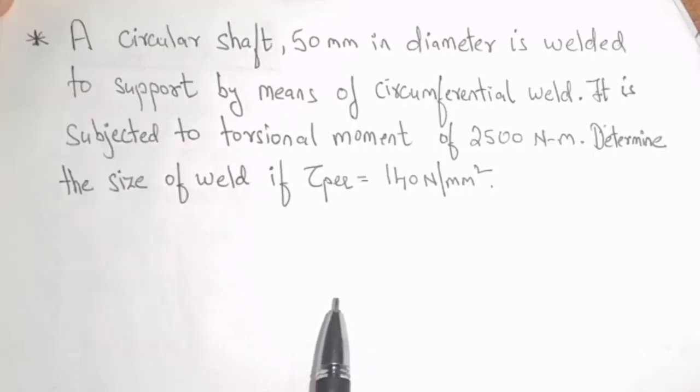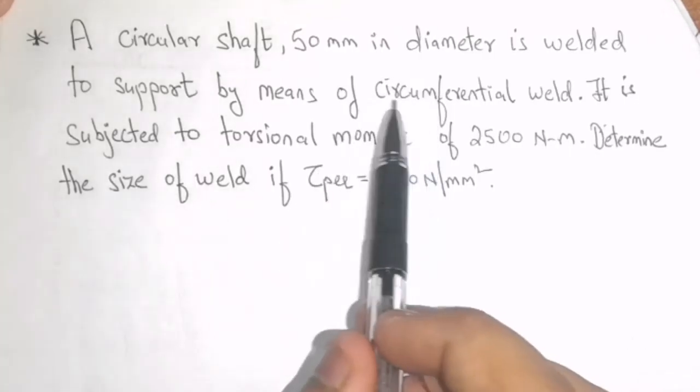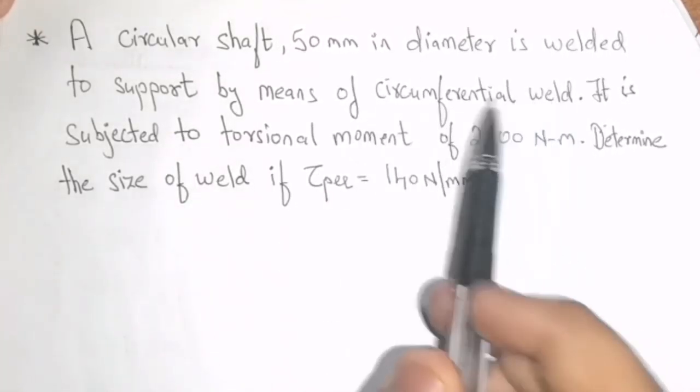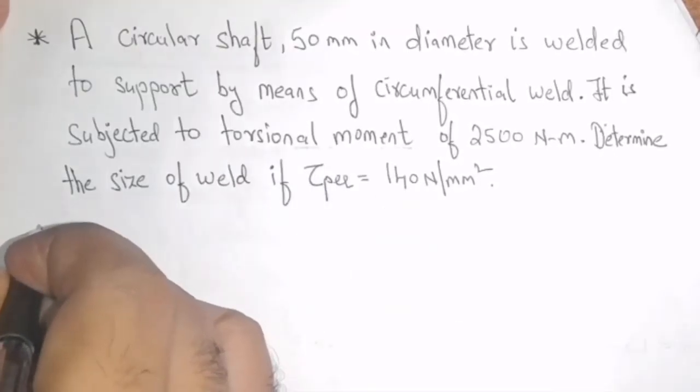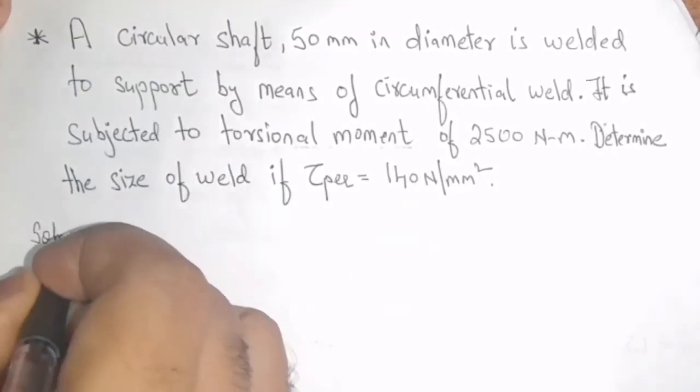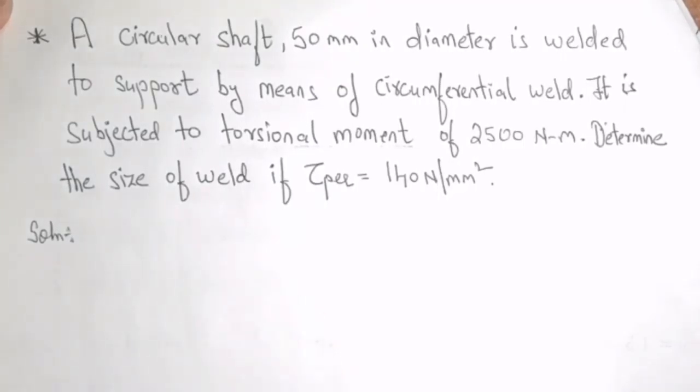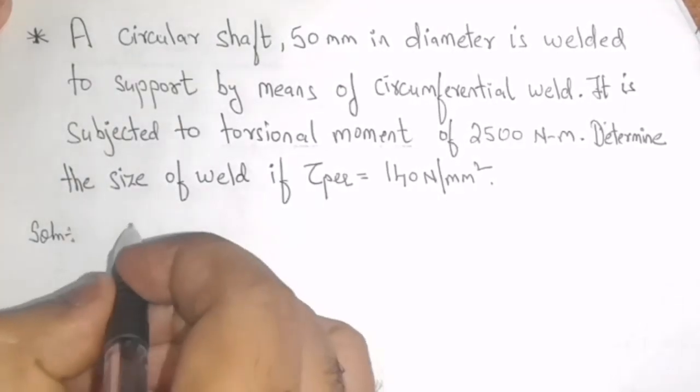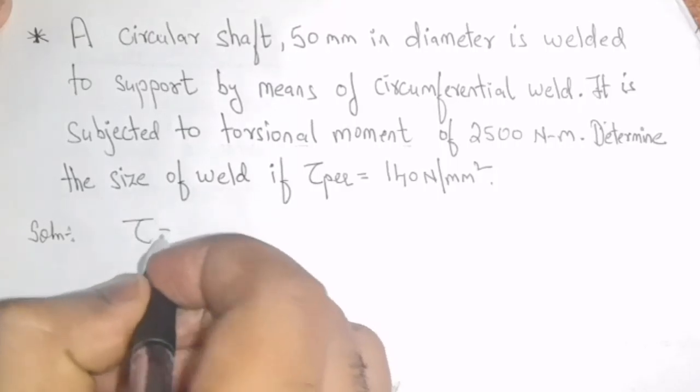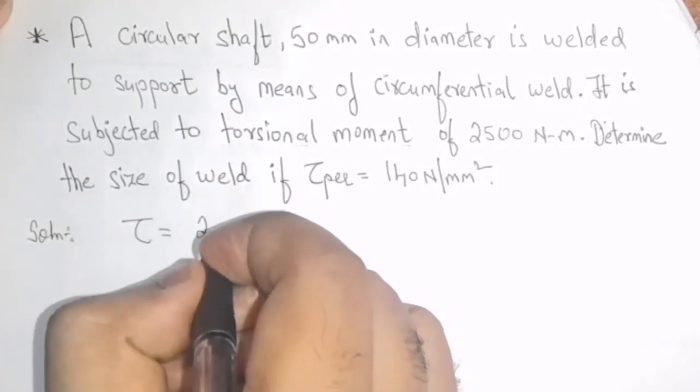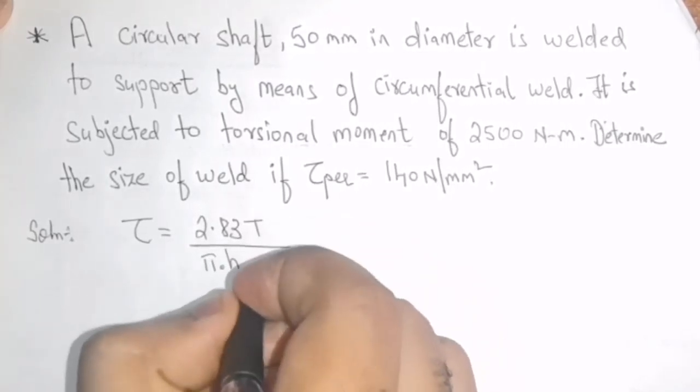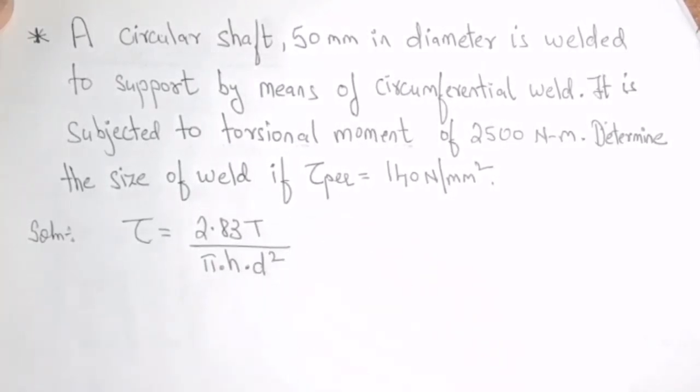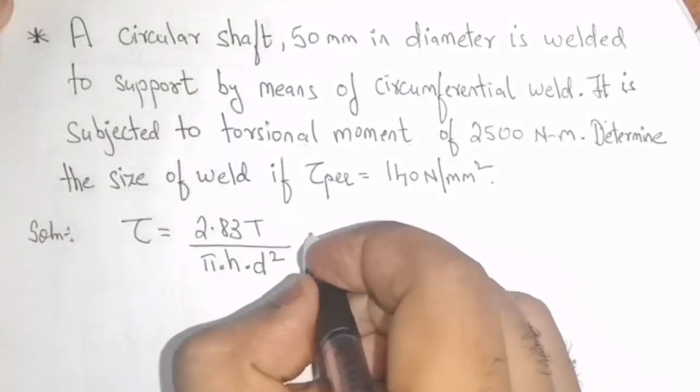By reading the question, we have identified that this is a problem of a circumferential weld when subjected to purely a torsional moment. Starting with the solution of this problem, now we have derived the relation that for this case, Tau will be equal to 2.83 T divided by pi into H into D square. And we can also write it is a standard relation from PSG 11.3.